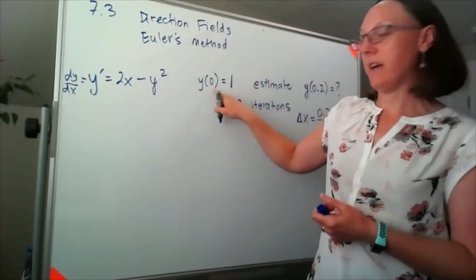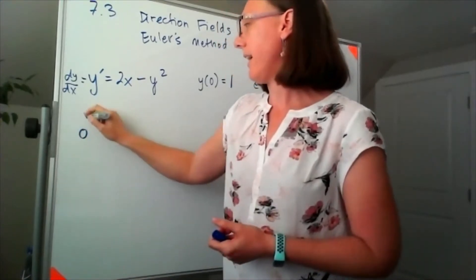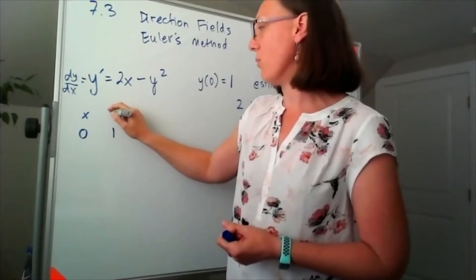So I'm starting at the point x equals 0, y equals 1, so I'm at an x-value of 0 and a y-value of 1.